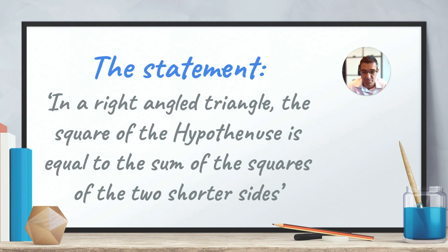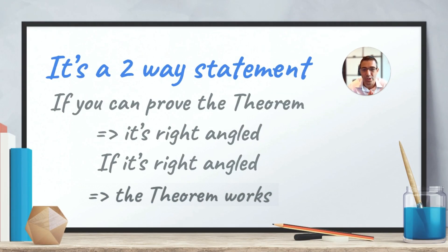If it's not, then Pythagoras' theorem doesn't work. Now, this is a two-way statement, which means that if you can prove the theorem, then it's a right-angle triangle. And if it's a right-angle triangle, then the theorem works.